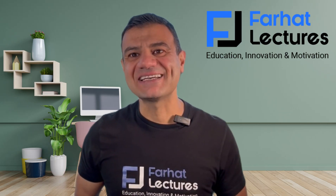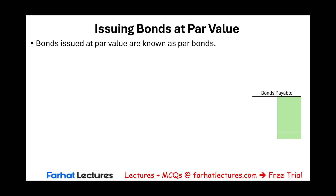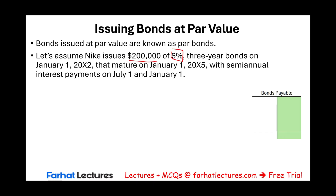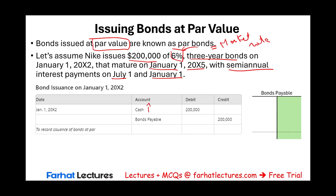Let's look at this example where we issue a bond at par value. Let's assume Nike issues $200,000, 6%, 3-year bonds on January 1st, 20X2. They mature January 1st, 20X5, with semi-annual interest payments paid on July 1st and January 1st. The company sold a bond and received exactly the face value — $200,000 — because the bond is sold at par. Why? Because the coupon rate equals the market rate. Therefore, the company will debit cash $200,000 and credit bonds payable $200,000, establishing a liability called bonds payable for $200,000.